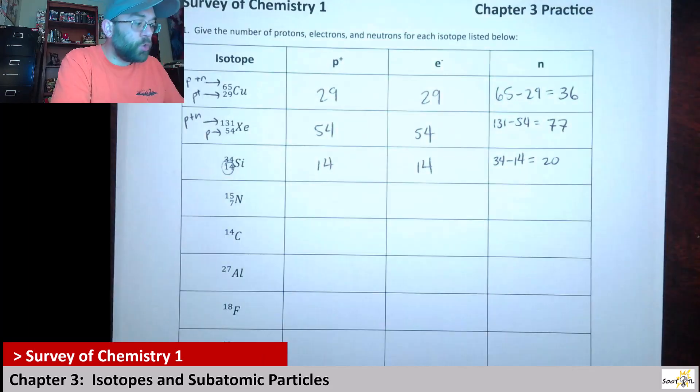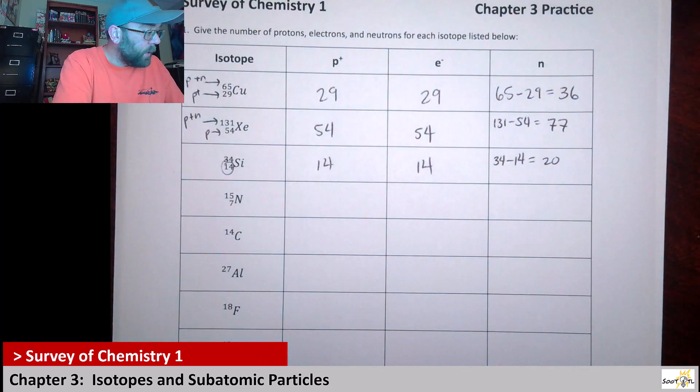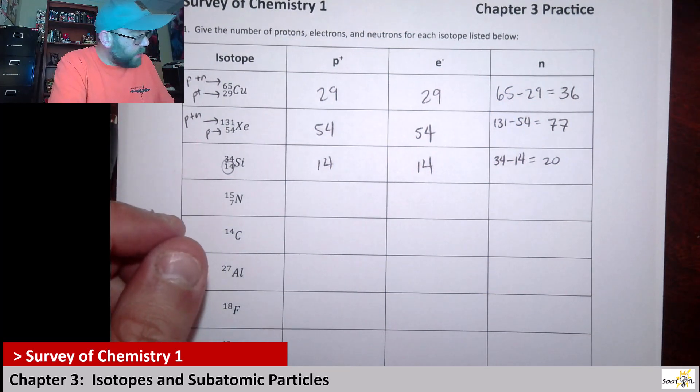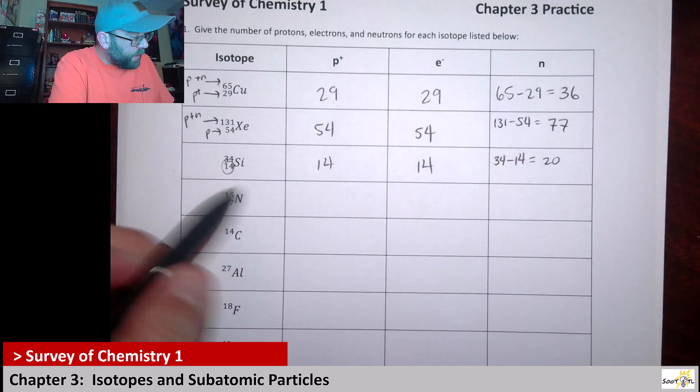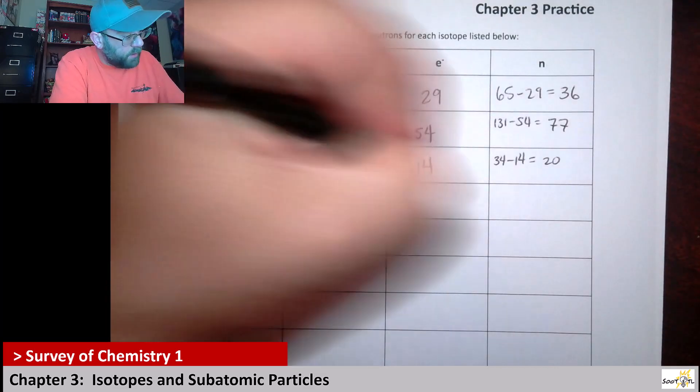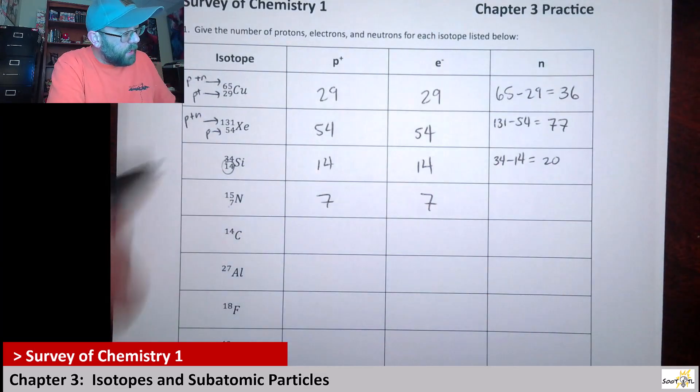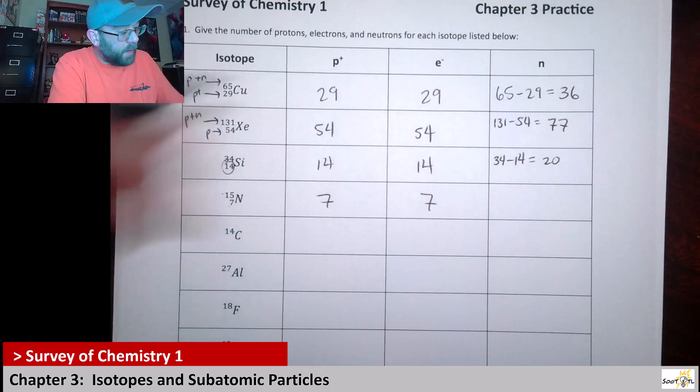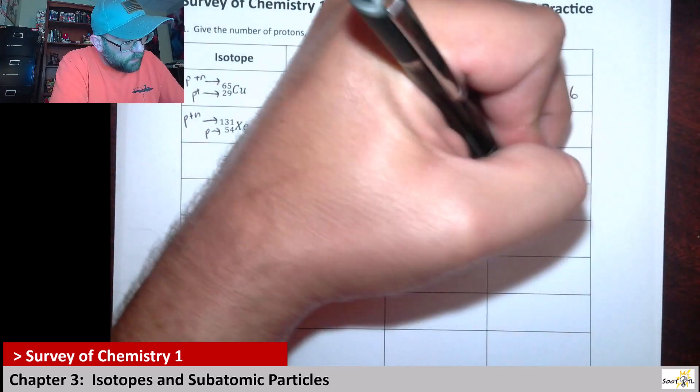Next up we have nitrogen. With nitrogen, they give us the number of protons, 7 and 7, and then to get the number of neutrons we're going to be saying 15 minus 7, and that's going to be 8.